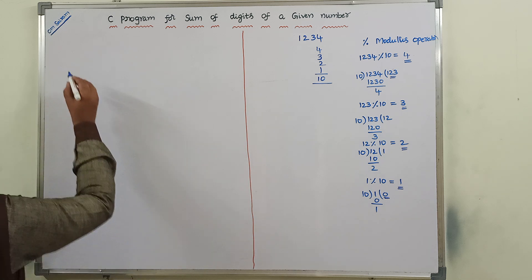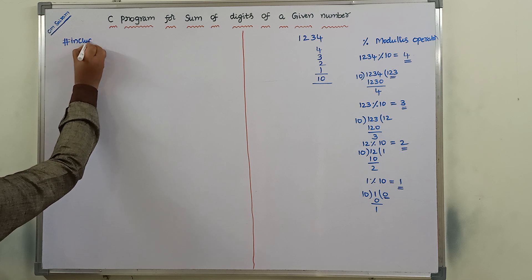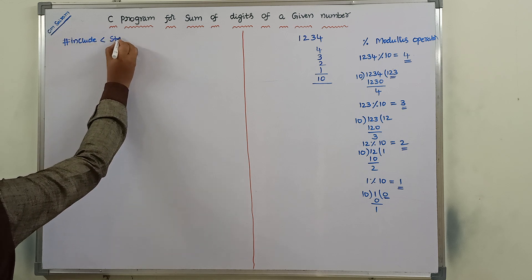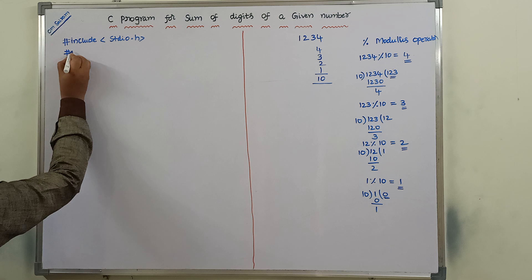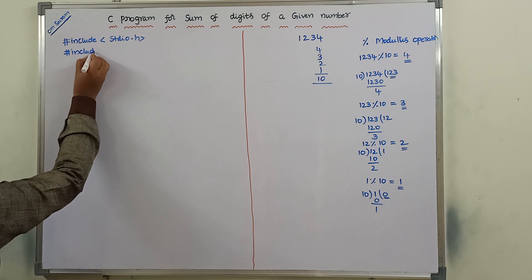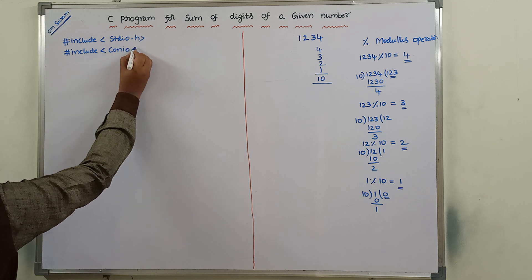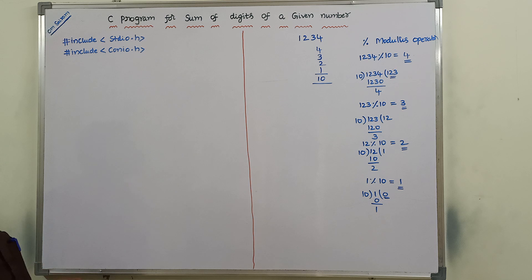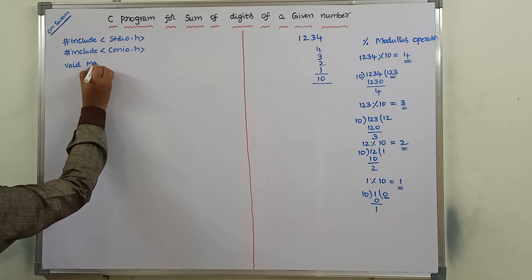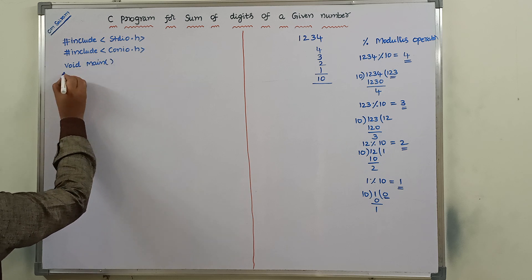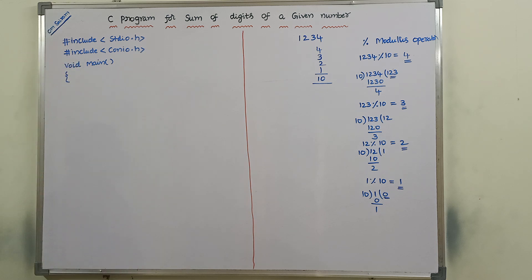Now, we have to write the program. So, hash include stdio.h — we have to include two header files to our program. Initially, hash include conio.h — console input output header file; stdio.h is the standard input output header file. Next, we have to write the main function: void main. The main function does not return anything, so we write void before the main function.